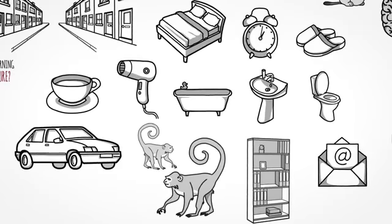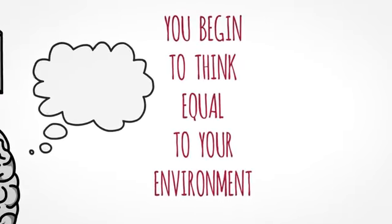it's the external environment that's turning on different circuits in your brain, causing you to think equal to everything that you know.